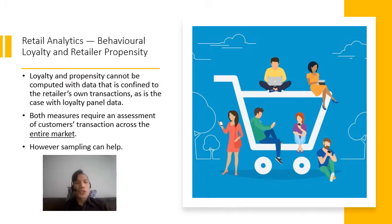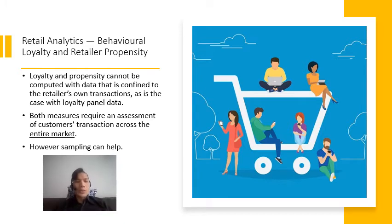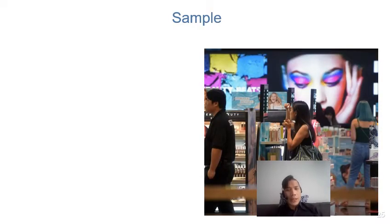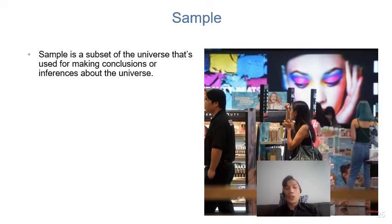Retail analytics looks at how behavioural loyalty and retail propensity can benefit the retailer. However, loyalty and propensity cannot be computed with data confined only to the retailer's own transactions — as is the case with loyalty panel data — you have to look across all retailers. Both measures require assessment of customer transactions across the entire market. Sampling can help with that. Sampling is basically a subset of the universe used for making conclusions or inferences about the universe.